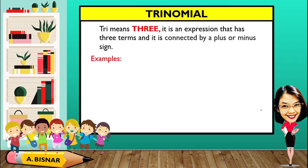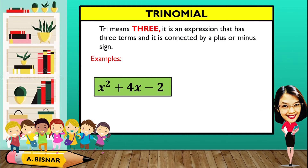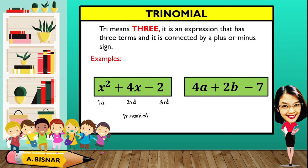Let us illustrate trinomial. Tri means 3. It is an expression that has 3 terms connected by a plus or minus sign. For example, x squared plus 4x minus 2: x squared is the first term, 4x is the second term, and 2 is the third term. Since we have 3 terms, it is considered a trinomial. Another: 4a plus 2b minus 7 — 4a is the first term, 2b is the second term, and 7 is the third term, making it a trinomial.